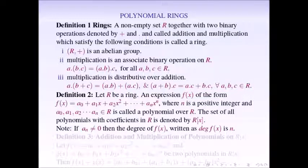First, let us recall the definition of a ring. A non-empty set R together with 2 binary operations, addition and multiplication, which satisfies the following conditions is called a ring. Condition 1: R with addition is an abelian group. Condition 2: multiplication is associative. Condition 3: multiplication is distributive over addition.